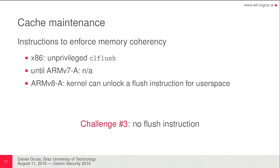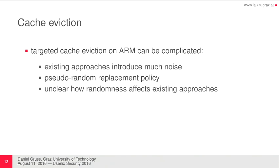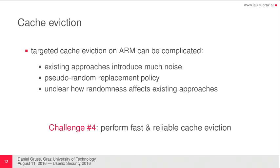The solution for cache eviction without a flush instruction is accessing a lot of memory and throwing data out of the cache that way. But previous work always used strategies like accessing 16 memory locations for a 16-way cache. On current ARM CPUs, which have a pseudo-random replacement policy, you may need to access more than 16 addresses to evict a 16-way cache, and there is no guaranteed eviction rate. This introduces noise — false positives and false negatives — making it harder or impossible to spy on singular events like keystrokes.